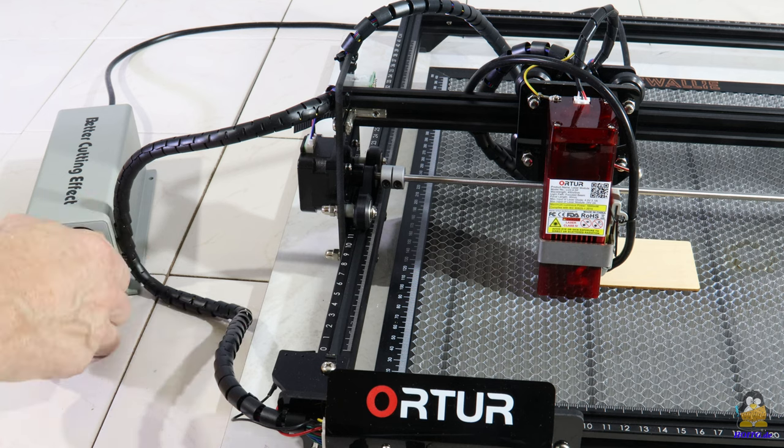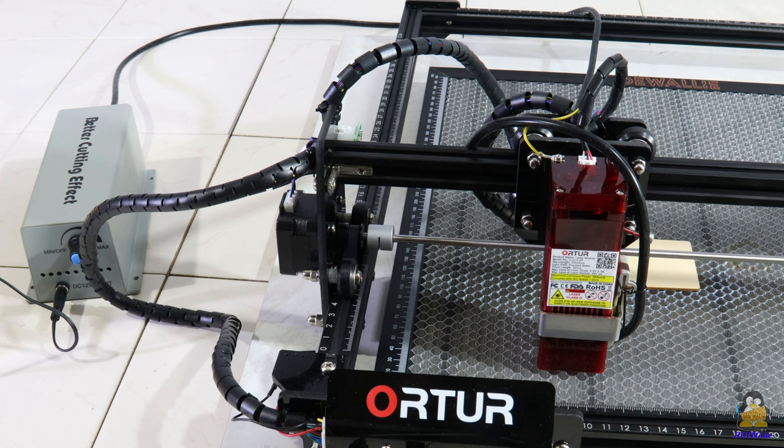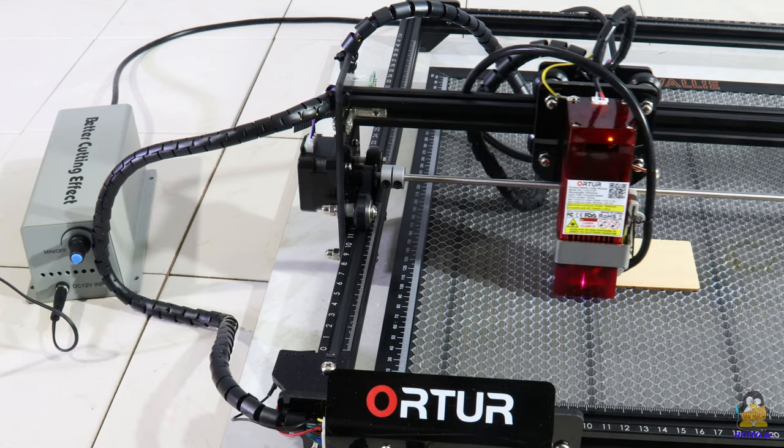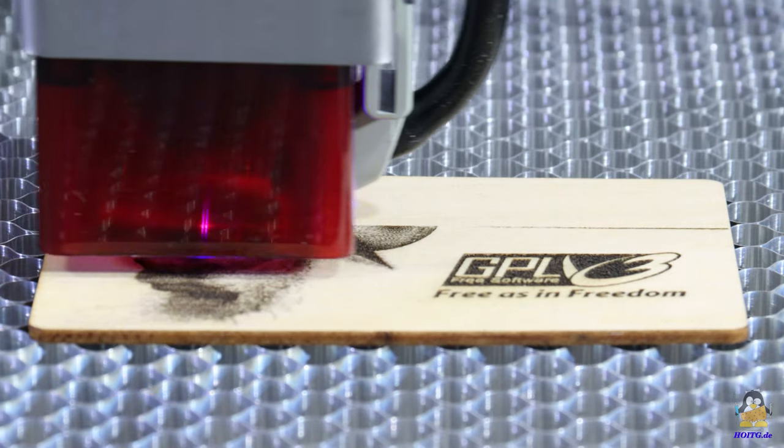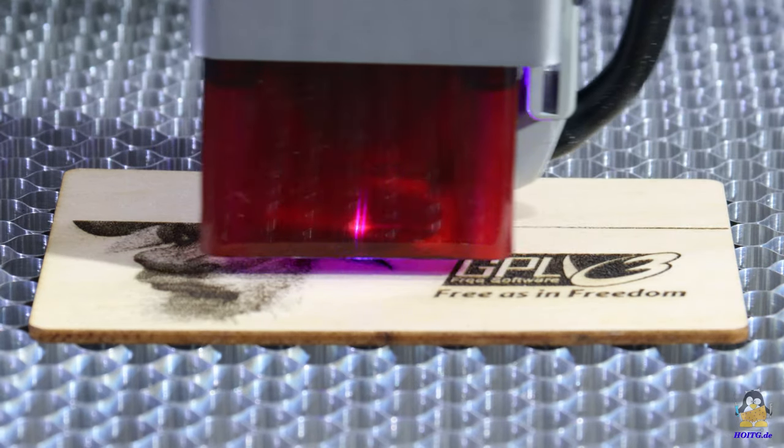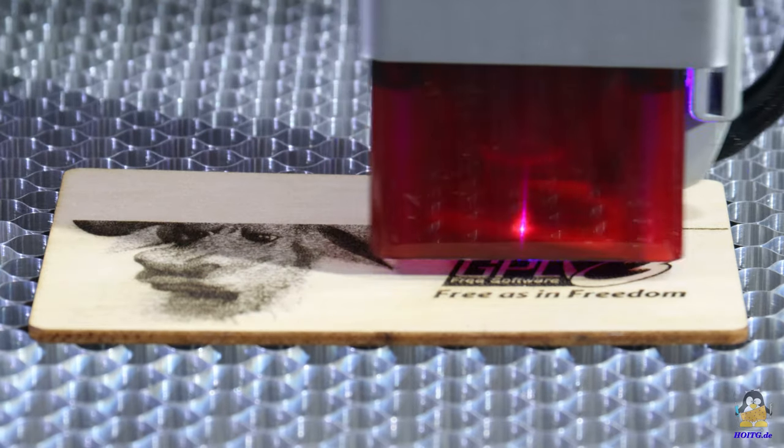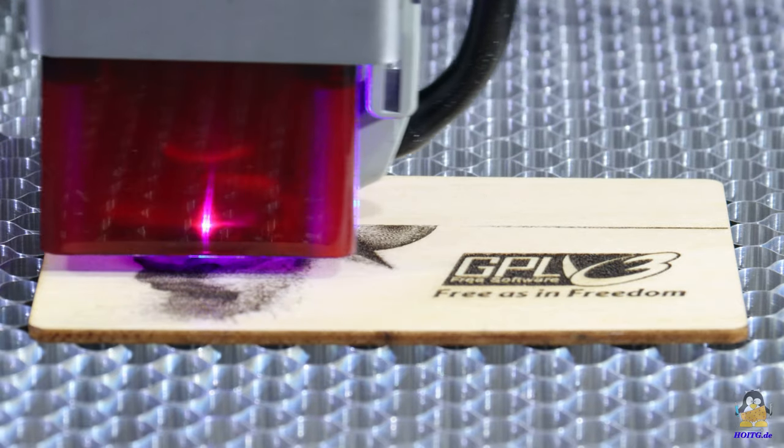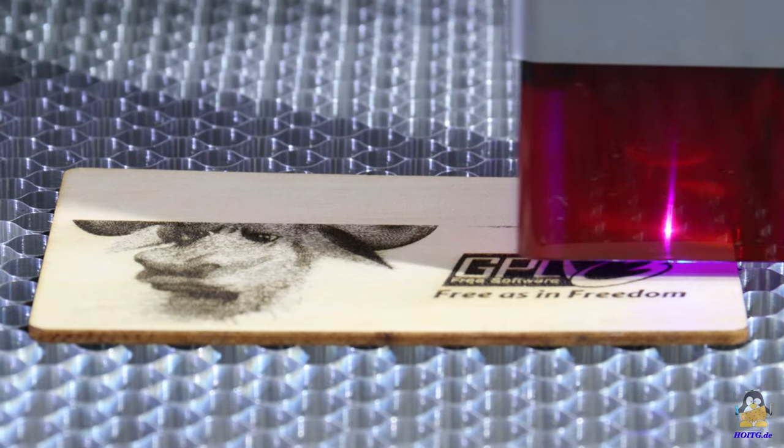As a next test I engrave the sample materials that shipped with the laser master. One of the plywood tiles is decorated with a graphic. Again, the template is a bitmap file that is processed line by line. The air pump blows the vaporized material away from the surface, resulting in finer dots. The airflow generated by the pump is so strong that the plywood plate, which is obviously not completely flat, is moved.